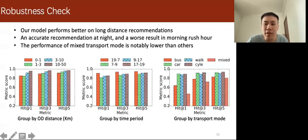Finally, we also show model performance in different routing query subgroups. We group queries by different OD pair distance, time period, and transport mode. As can be seen in the first picture, our model performs better on long-distance recommendations.